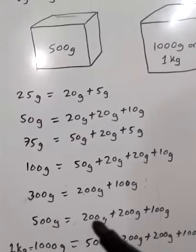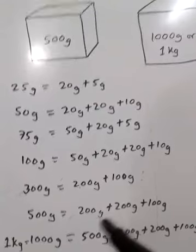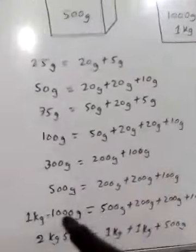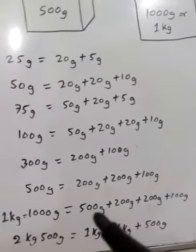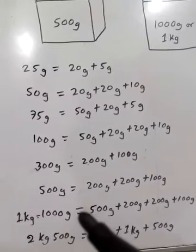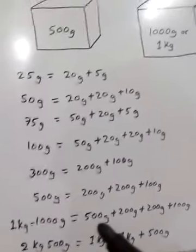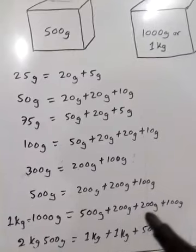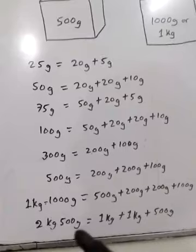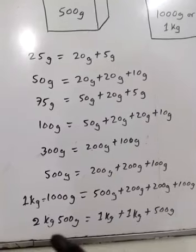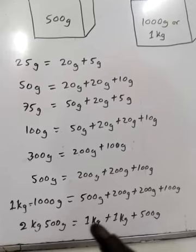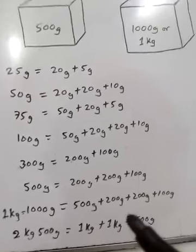To weigh 500 gram, use 200 gram plus 200 gram plus 100 gram. To weigh 1 kg, use 1 kg weights. For 2 kg 500 gram: 2 kg equals 2000 gram, plus 500 gram. Use 1 kg plus 1 kg plus 500 gram.